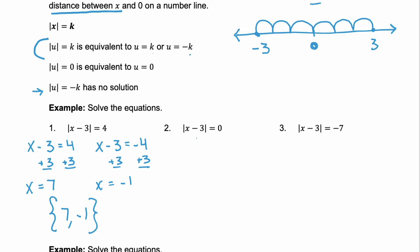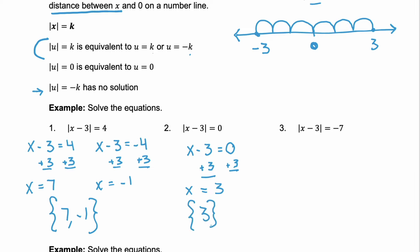Now, look at example 2. It's saying our distance traveled is equal to 0. So, we're going to solve x minus 3 is equal to 0. Add 3 to both sides, and we see that the only solution here is x equals 3. Put that in a solution set. Example 3: your distance traveled is negative 7 units. Can't do this. This is not possible. We just said you can't travel a negative distance. So, this is an empty set. There's no solution to this problem.